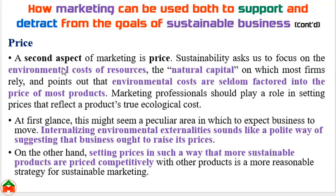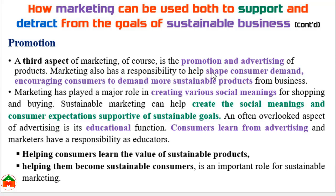The second part of marketing is price. To ensure sustainable pricing, the company should include the environmental cost in the product price so they can address environmental issues while doing the production process. The third aspect of marketing is promotion and advertising. Through promotion and advertising, a company can shape consumer demand and educate the customer by providing required information about the product and service. A sustainable business should introduce promotional activities that shape customers' demand toward sustainable products and make customers more aware of the environmental impact of using products and services.